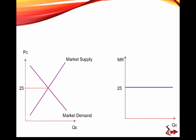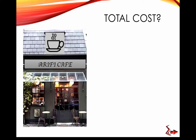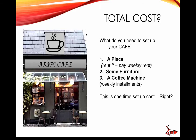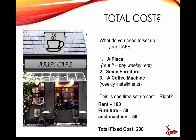Suppose you have a cafe called Leafy Cafe. To set it up, you need a place — you pay weekly rent — and furniture and a coffee machine purchased in weekly installments. These are the one-time setup costs. Say rent is $100, furniture is $50, and the coffee machine is $50. The total fixed cost is $200. It's called fixed cost because it's the setup cost you're paying regardless.